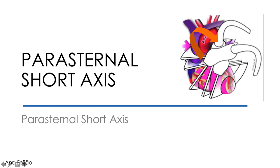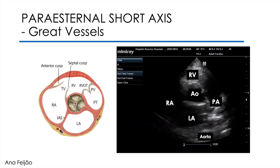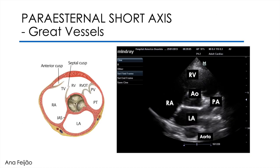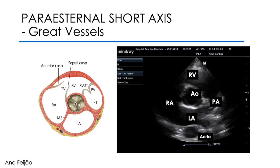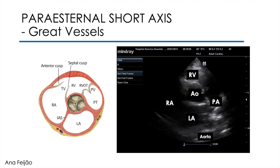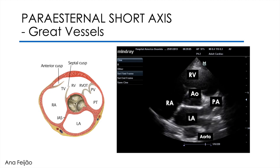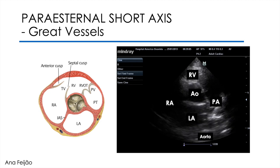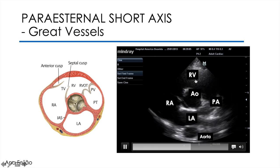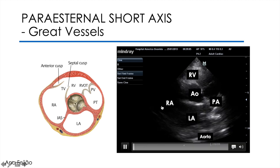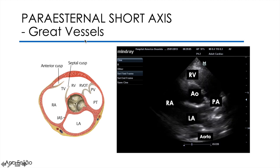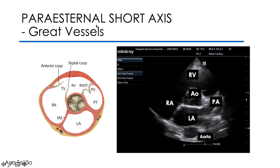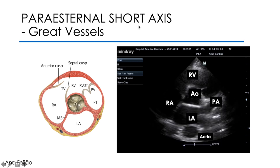Normally I start at the top. I tilt the probe towards the head or neck of the patient and stop when I get this image. This view is called the parasternal short axis at the level of the great vessels.